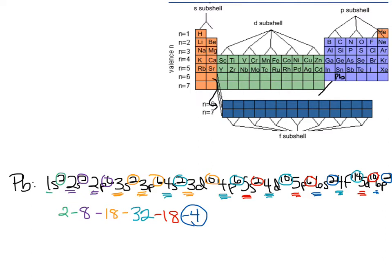For valence electrons, it's also helpful to look at the periodic table and the group the element is in. Group 1 will always have 1 valence electron, group 2 will always have 2. Skipping over the transition metals — since there are some anomalies and the d electrons don't count as valence — then in the p block: 3 valence, 4, 5, 6, 7, and group 18 noble gases have 8, except for helium which has 2 because only two electrons fit in the first shell. It's helpful to just eyeball the periodic table to find valence electrons rather than writing out the whole electron configuration, though you can do both.